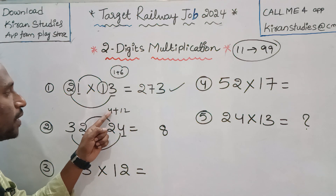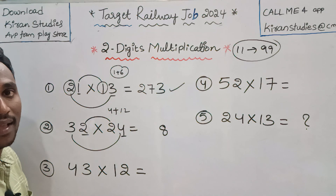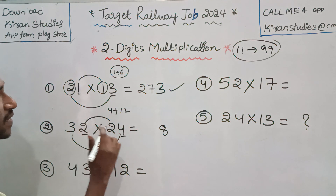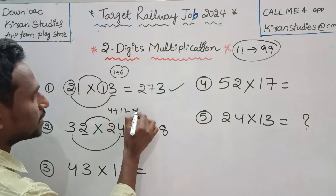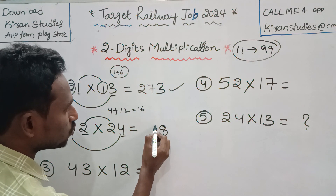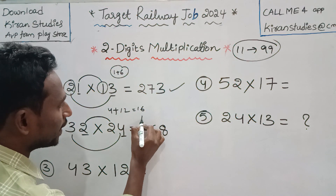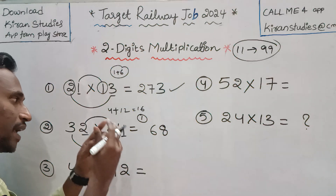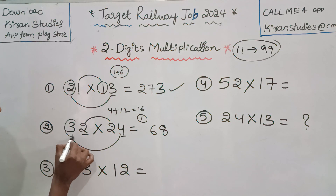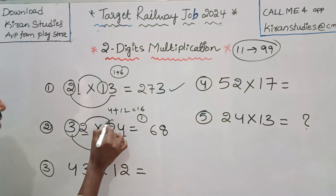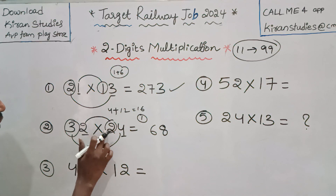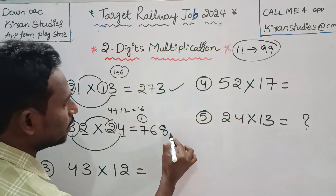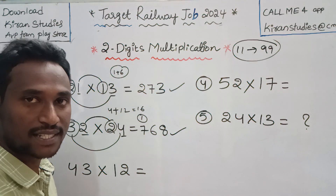So 12 plus 4 is 16. 16 means this is the unit digit, and the 1 is the carry. Next, we add the starting numbers: 3 times 2 is 6. 6 plus 1 is 7. So the answer is 768.